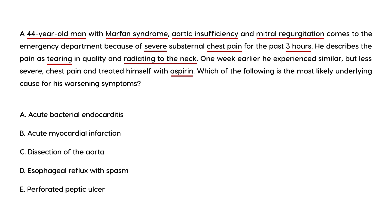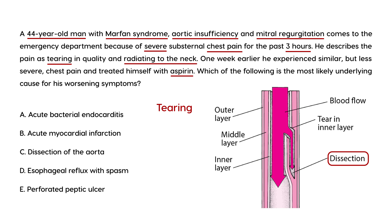When a patient describes their pain, the words they use can help a lot. The word here is 'tearing,' and tearing is often associated with dissection — it might help to remember that the word tear is even in there. That's a nice buzzword to remember. What's really happening with this patient is that he is having a dissection, which is why he has such severe chest pain. The answer is dissection of the aorta.